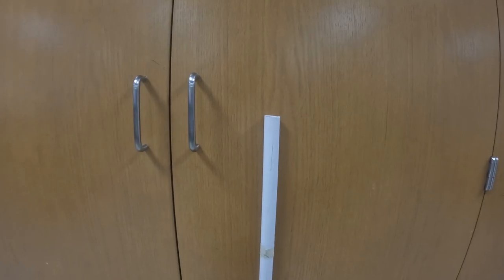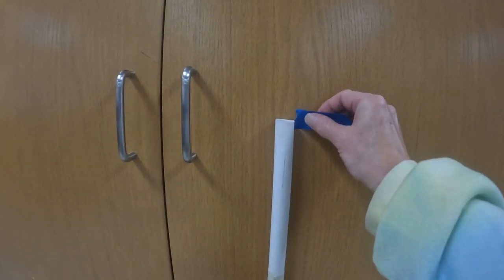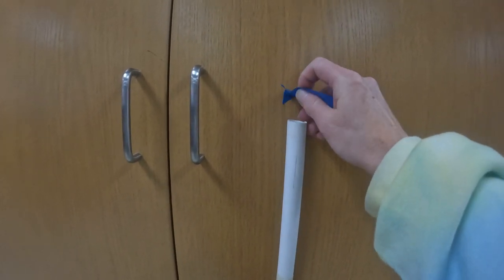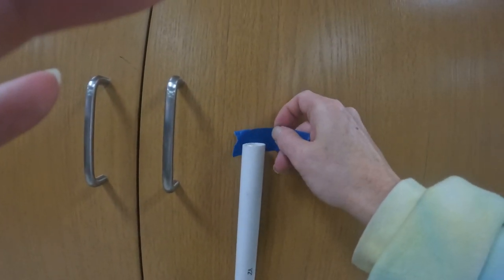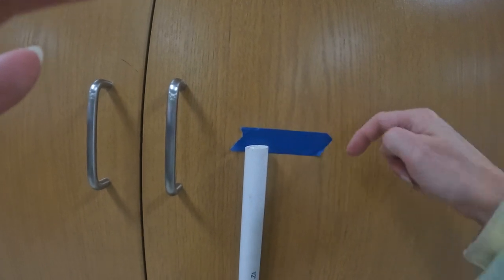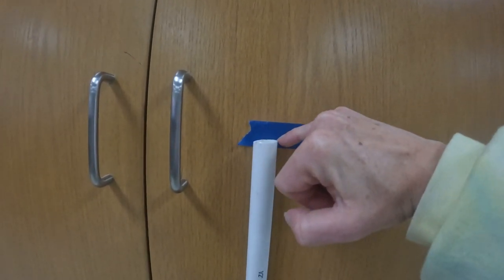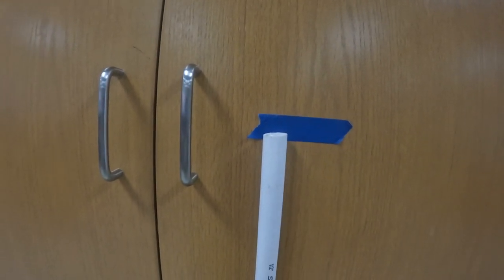To measure the height vertically, put a piece of masking tape on the door or wall so you don't mark on the doors. That way you can mark here and measure from the floor.